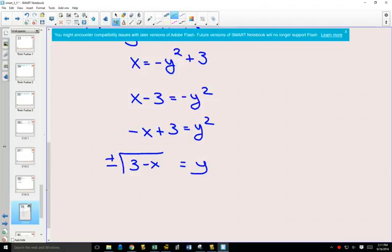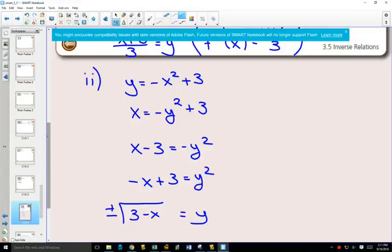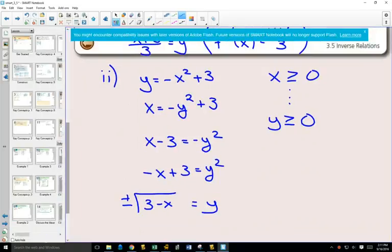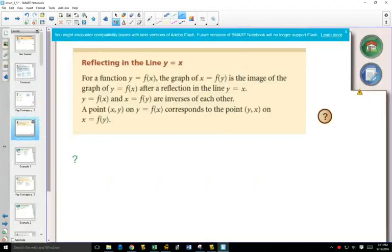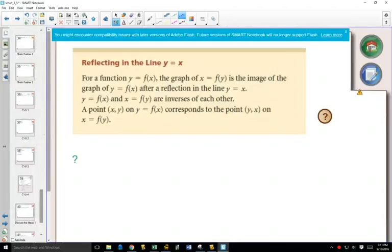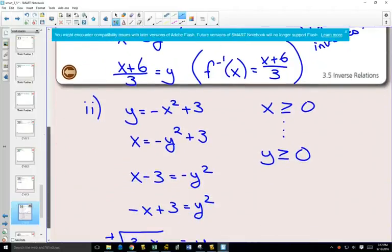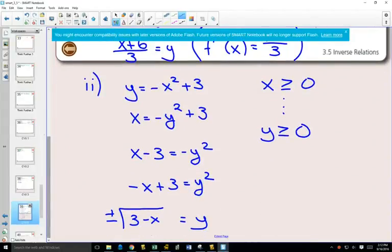So algebraically, if an inverse switches the x and the y, and originally we were told that x was bigger than or equal to 0, what does that mean on our inverse? Well, if you switch x and y, it would now mean that on our inverse, y has to be bigger than or equal to 0. If y is bigger than or equal to 0, this means for this we only have the positive one.